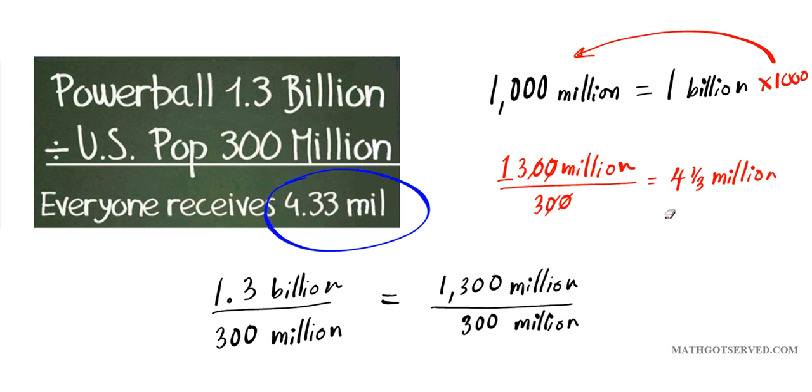If we want to write this in a decimal approximation, it is approximately 4.33 million dollars. This answer will be correct if there were just 300 people living in the United States. But is that the case? The answer is no. There are roughly 300 million.